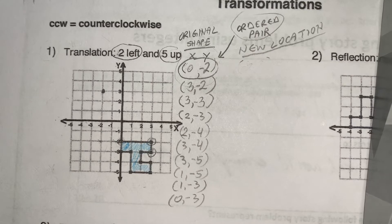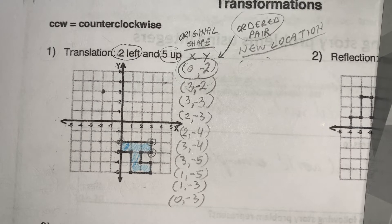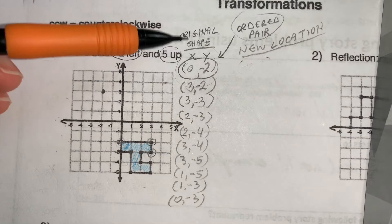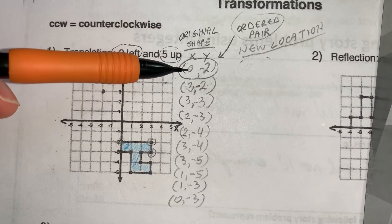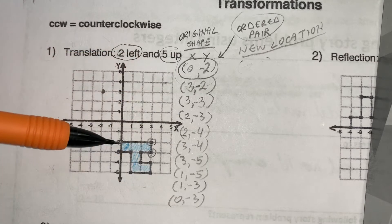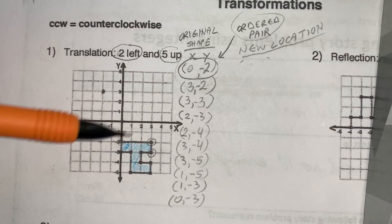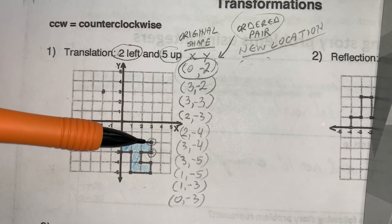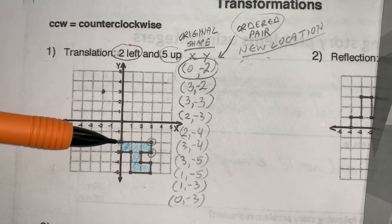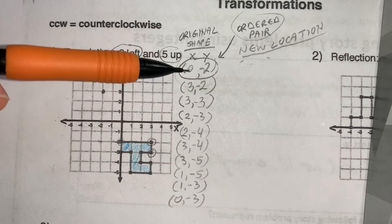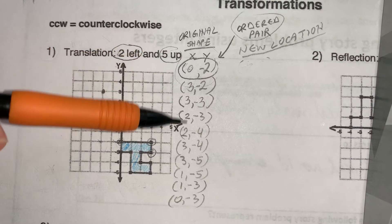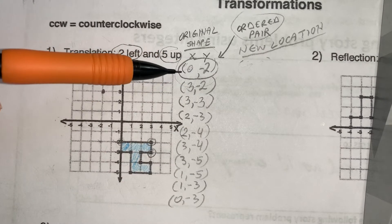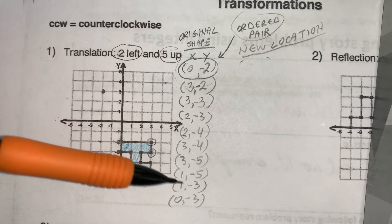Hello kitties. So here we are, video number three. We are going to proceed with finishing this problem right here. In the previous video, I had asked you to write down the ordered pairs that represent this shape — basically the x and y coordinates of each of the points around the perimeter making this shape. I did a couple of them and then asked you to finish the rest.